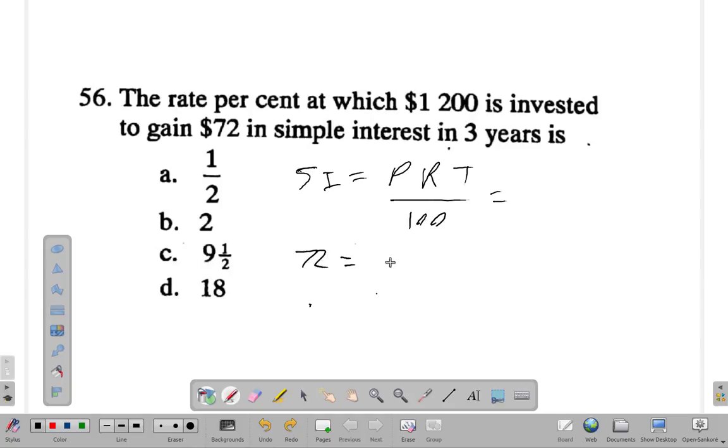The simple interest is the principal, $1,200, times the rate (whatever that is) times the time, which is 3 years, over 100. We can cancel: 100 into 1,200 is 12, times 3 is 36. So 36R equals 72.